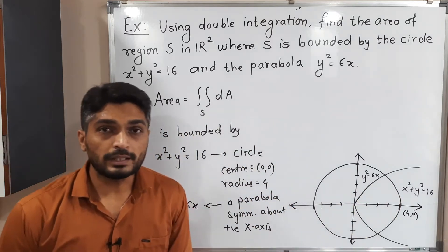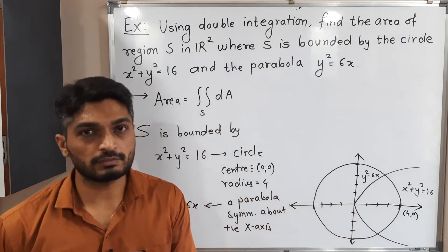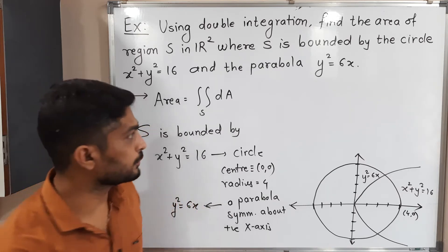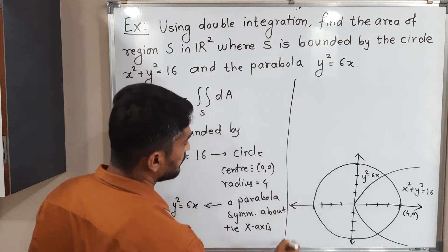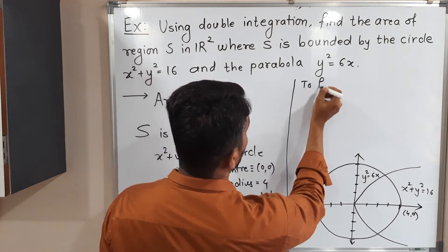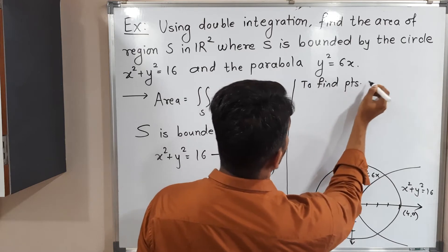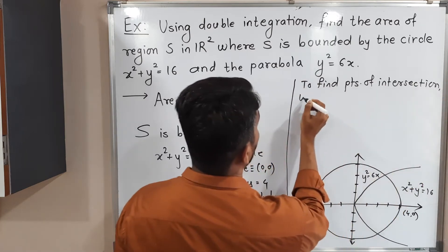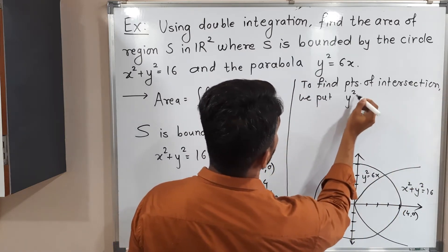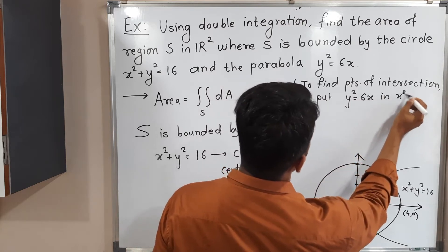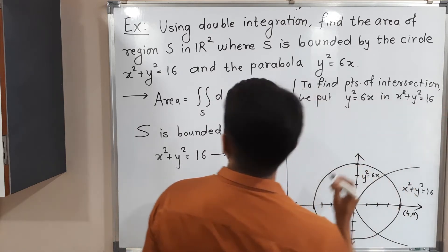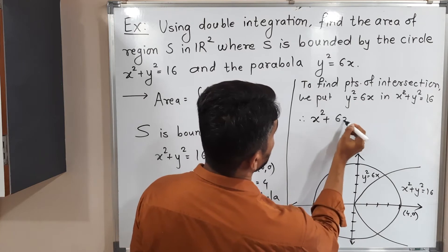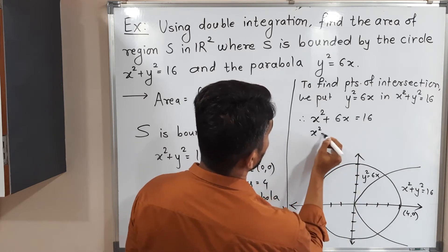We need to find the points of intersection. The technique is simple: we put one equation into the second equation. We put y² = 6x into x² + y² = 16. Therefore x² + 6x = 16.